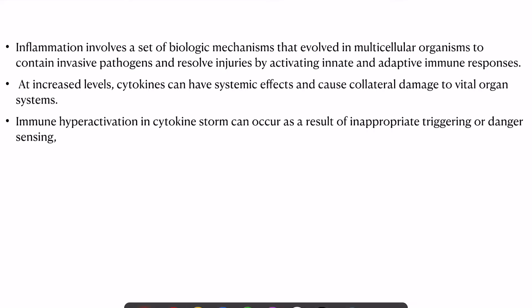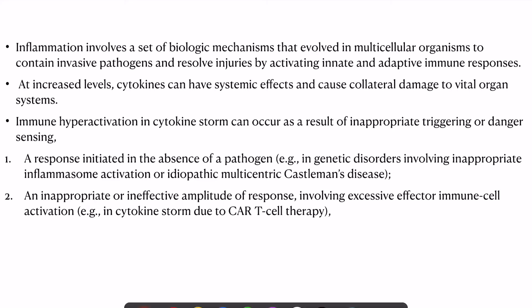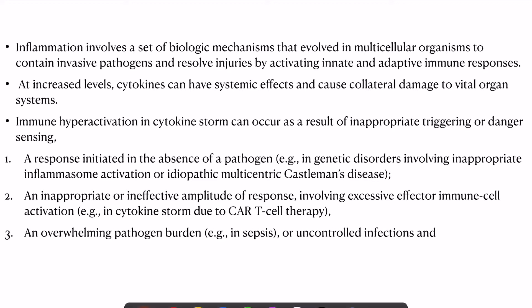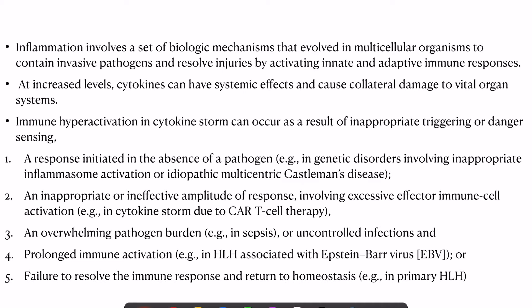Immune hyperactivation in cytokine storm can occur from five mechanisms: a response initiated in absence of a pathogen like Castleman's disease; an inappropriate or ineffective amplitude of response to effector immune cells like CAR-T cell therapy; overwhelming pathogen burden or uncontrolled infection like sepsis; prolonged immune activation like HLH associated with Epstein-Barr virus; or failure to resolve the immune response and return to homeostasis, like primary HLH.